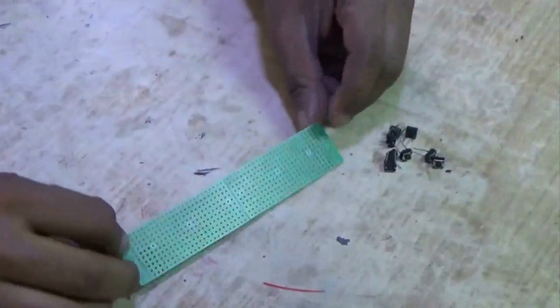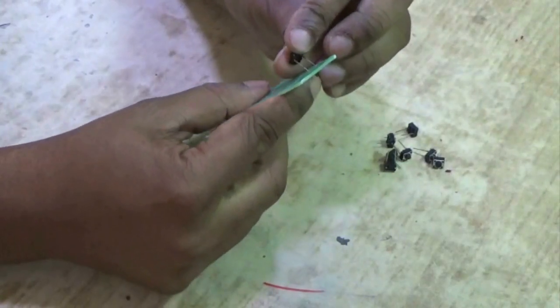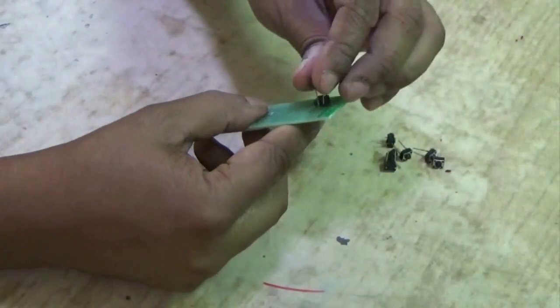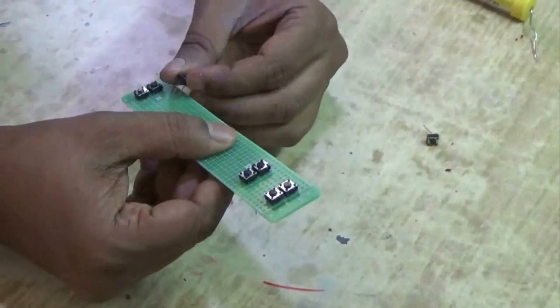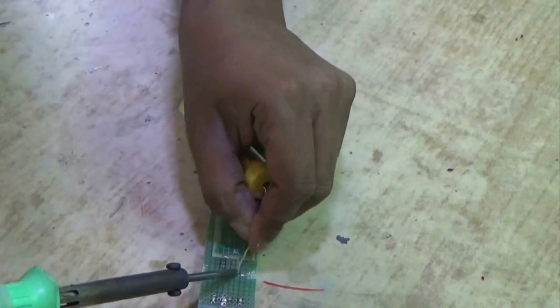To make the joystick I am going to use a Vero board and 8 switches. Place the switches in pair on the board as shown in the video. Then solder all the switches with the board.